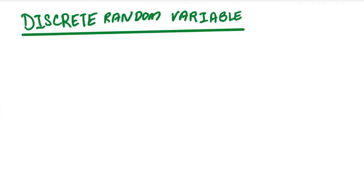Hey everyone, welcome back to A Level Lessons Online, hope you're having a fantastic day. By now a lot of you will be heading back to school or on alternate schooling days. I'm still going to carry on with my weekly uploads and we're moving on to our next part of the math content series, looking at discrete random variables. It's still part of statistics, and DRV is actually one of the easiest parts of stats that you definitely need to score.